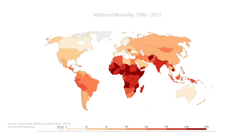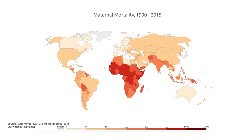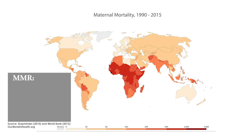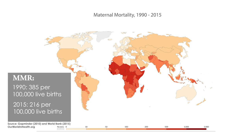Between 1990 and 2015, maternal mortality declined by 44% globally. It came down from an MMR of 385 per 100,000 live births to 216 per 100,000 live births. This decline has been historic and never before seen in the history of humankind.